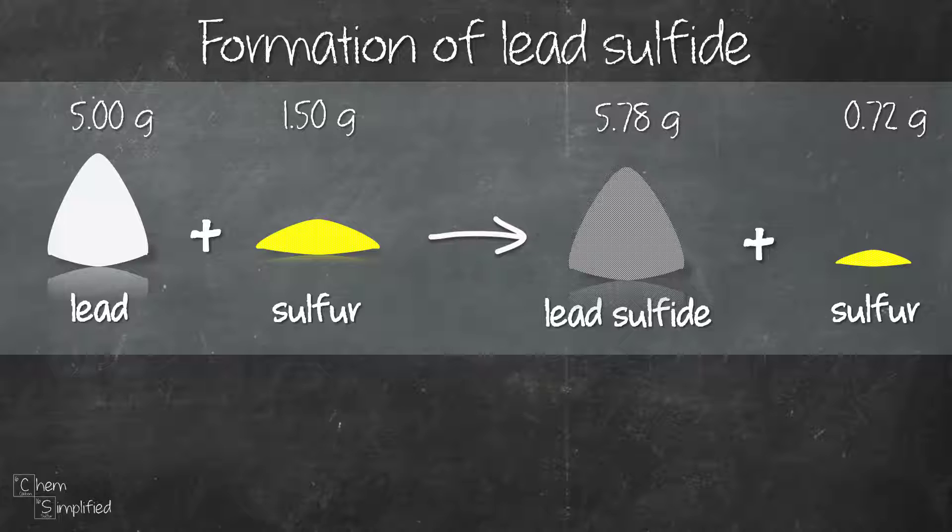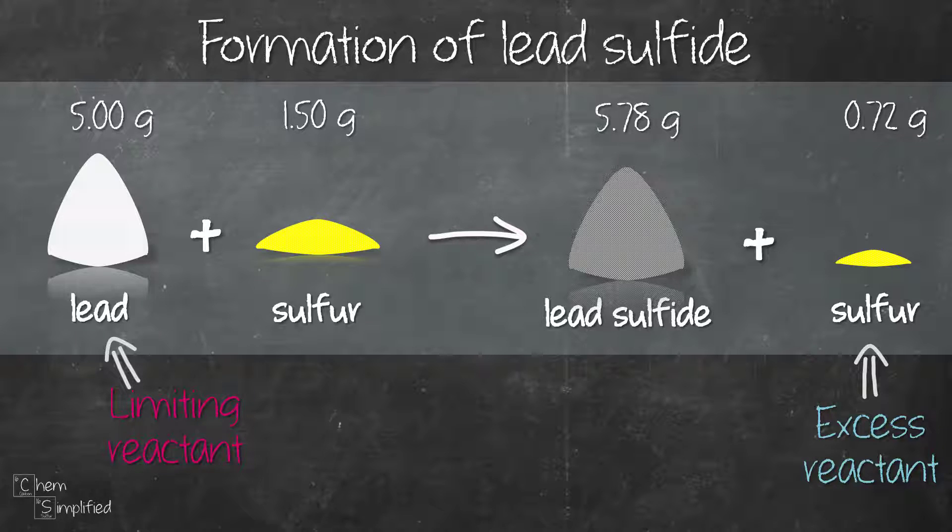Now which reactant is excess reactant? Yep, it's the sulfur since we have 0.72 grams left over after the reaction. So that makes lead the limiting reactant because it is used up completely in the reaction. We don't see it appearing on the product side.